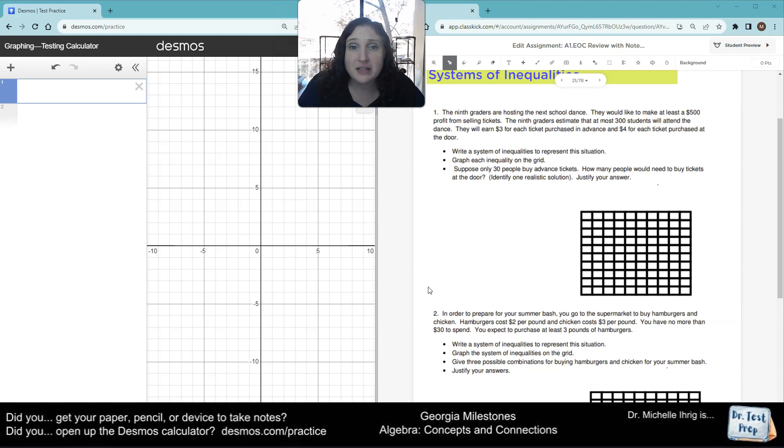The ninth graders are hosting the next school dance. They would like to make at least $500. So we know that $500 is the target. Remember, once we know a number, we have to go below and above. So if they want to make at least $500...